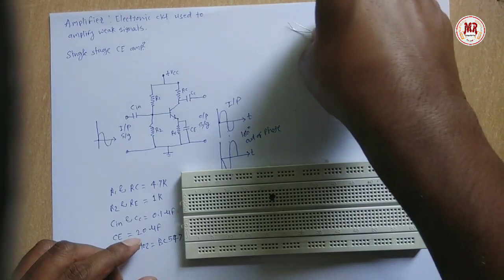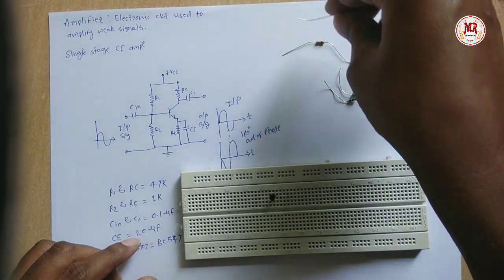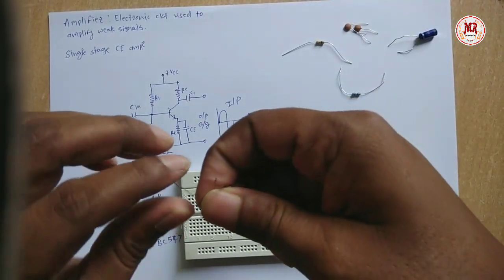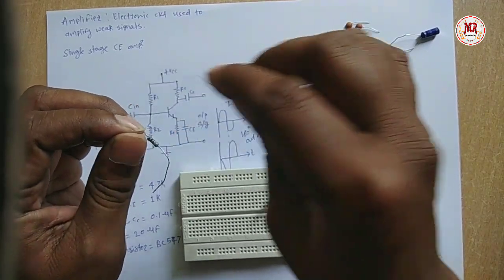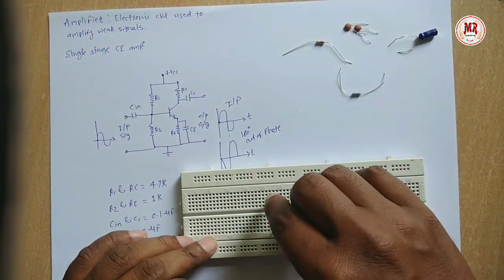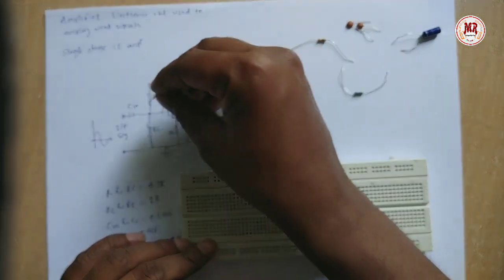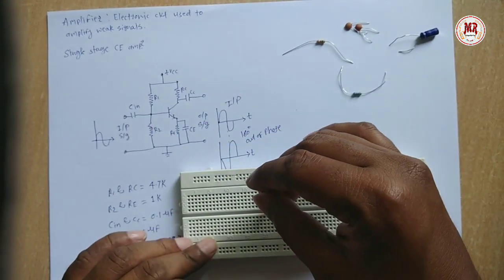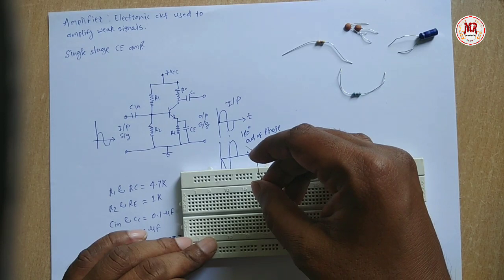Now voltage divider circuit R1 and R2. 4.7K resistor for R1 and 1K ohm for R2.